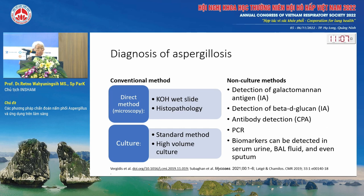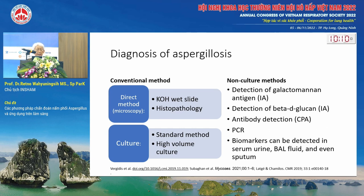The conventional mycology laboratory methods for aspergillosis diagnosis are: direct wet slide using KOH, and histopathology. Another method is culture, and nowadays some researchers use high-volume culture methods that differ from standard culture. Non-culture methods include detection of galactomannan (GM) antigen, beta-D-glucan (BDG), antibody detection for CPA, and PCR. Biomarkers like galactomannan and beta-D-glucan can be detected in body fluids.